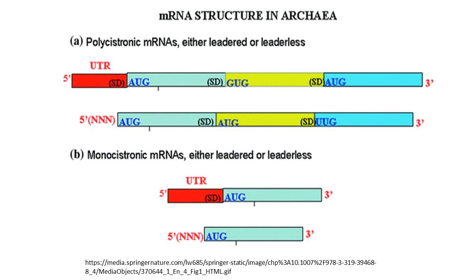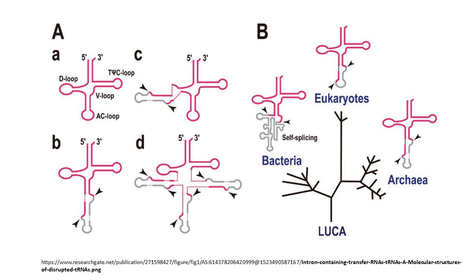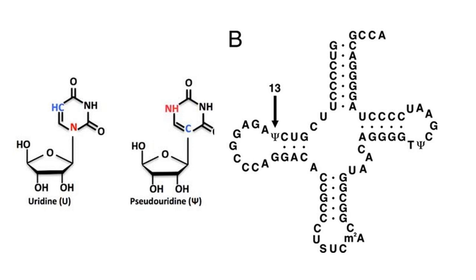Archaeobacteria have few plasmids. Archaeobacterial mRNA appears similar to that of eubacteria rather than eukaryotic mRNA. Polygenic mRNA has been discovered and there is no evidence for mRNA splicing. Archaeobacterial promoters are similar to those in eubacteria. Despite these and other similarities, there are also many differences. Unlike both eubacteria and eukaryotes, the T-arm of the archaeobacterial tRNA lacks thymine and contains pseudouridine or 1-methylpseudouridine.